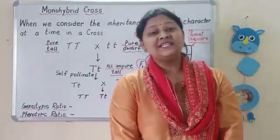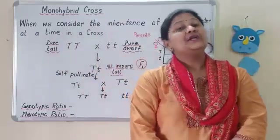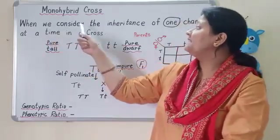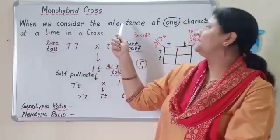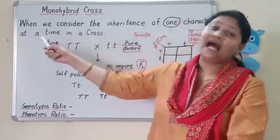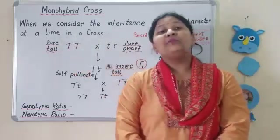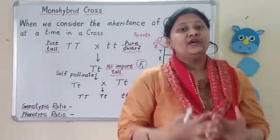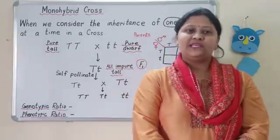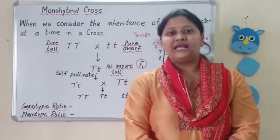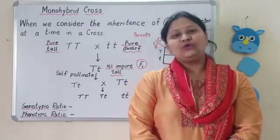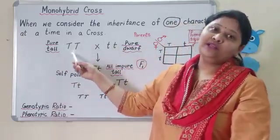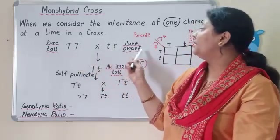The word mono means one character. When we consider the inheritance of one character at a time in a cross, it is called a monohybrid cross. Mendel performed this monohybrid cross experiment on the pea plant and he considered the height of the plant — that is, tall and dwarf. Now see the parents: the pure tall parent and the pure dwarf parent.